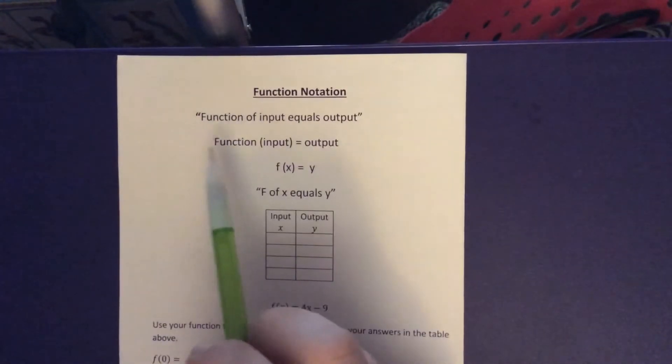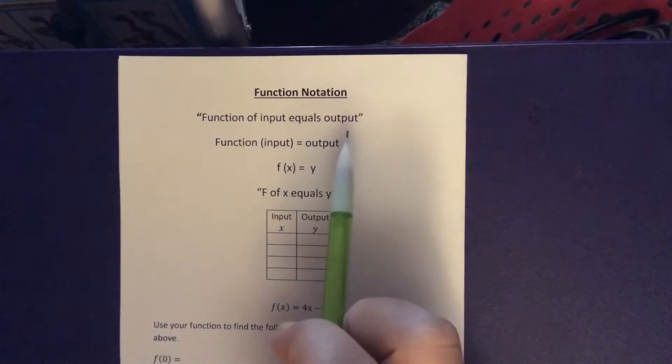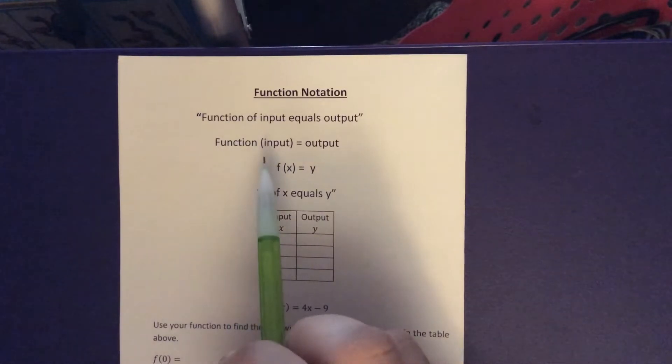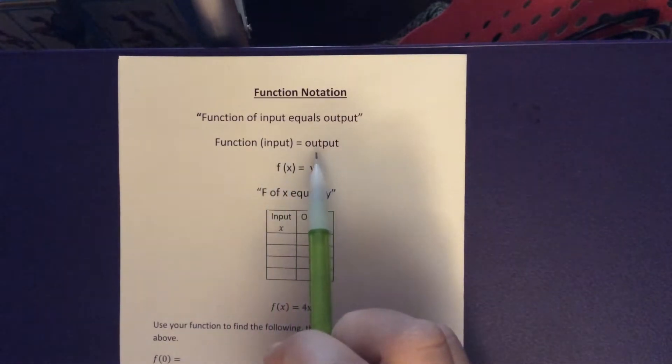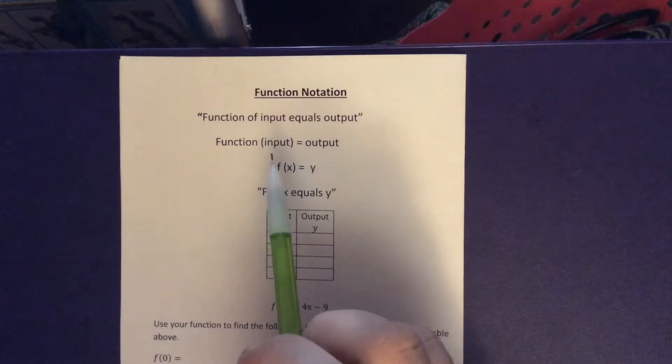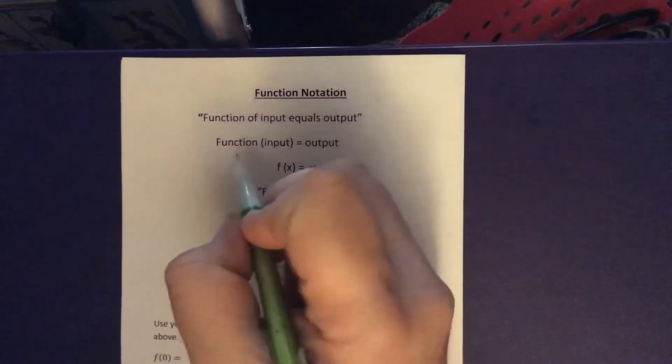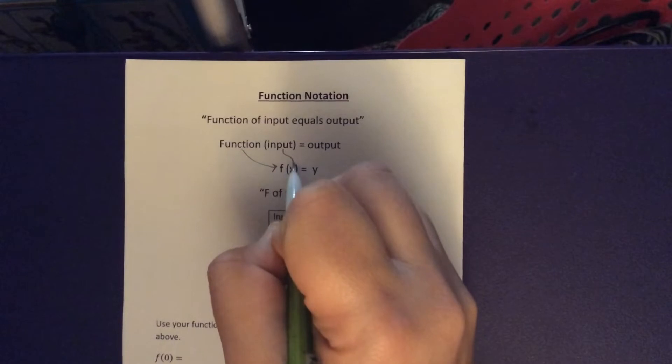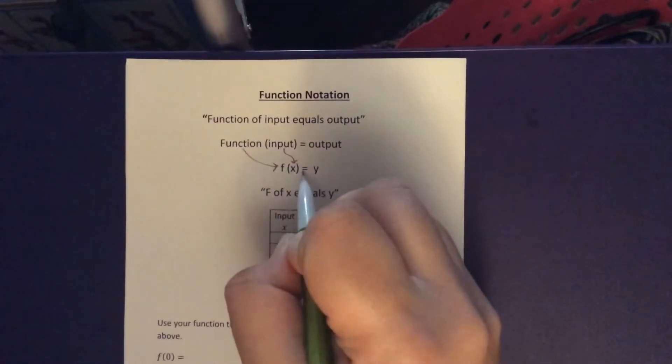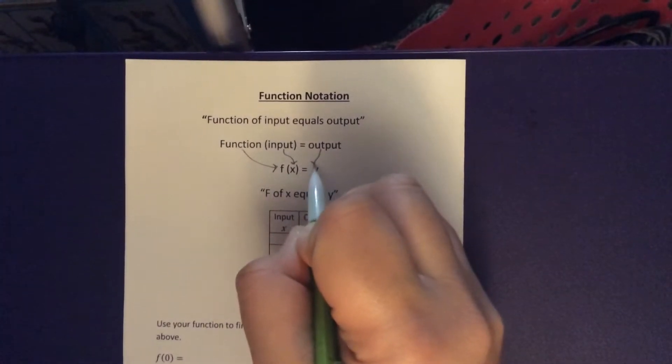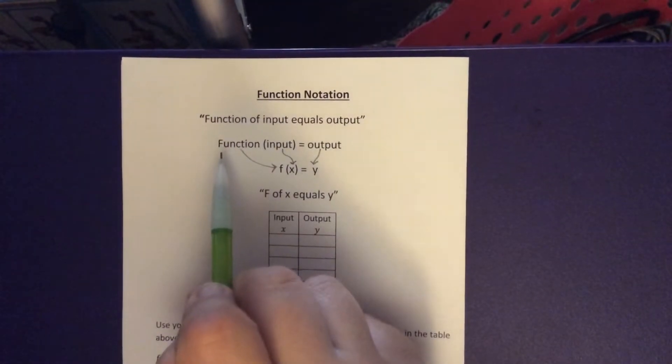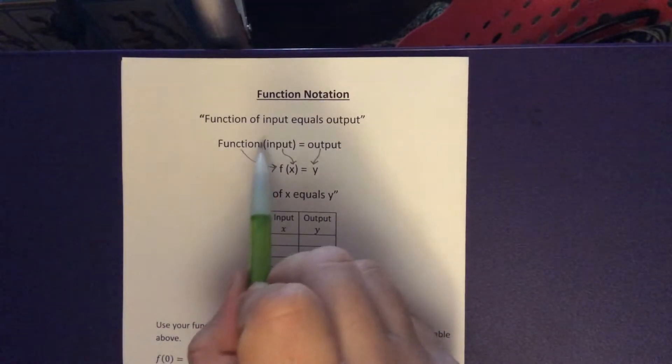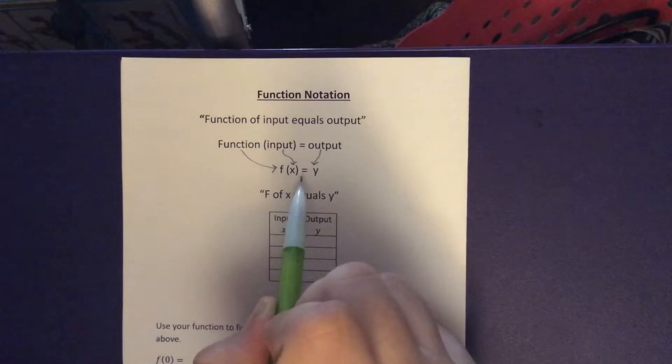So here we have function of input equals output, or if we start into the mathematical notation, function parentheses input equals output. If we go a little further into mathematical notation, we have function, which we have our f right here, input, which we represent as x equals output. So we can take these words that we know, these vocabulary terms, function, input, output, and we can use even parentheses to represent the different pieces.